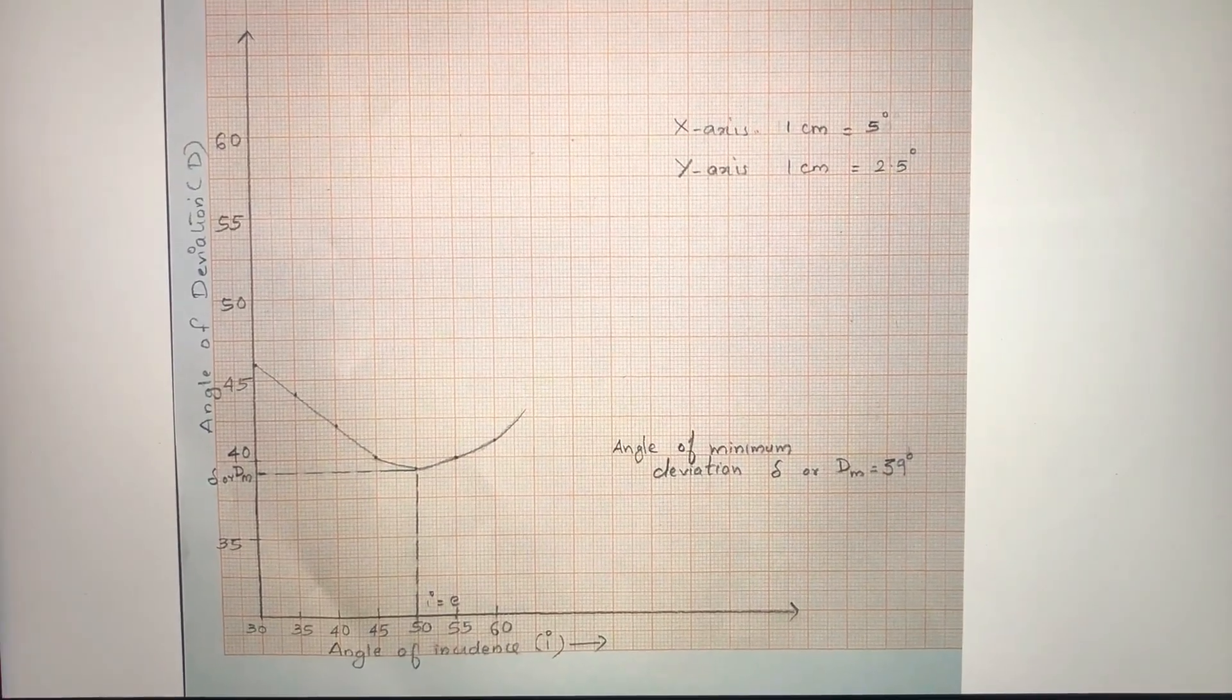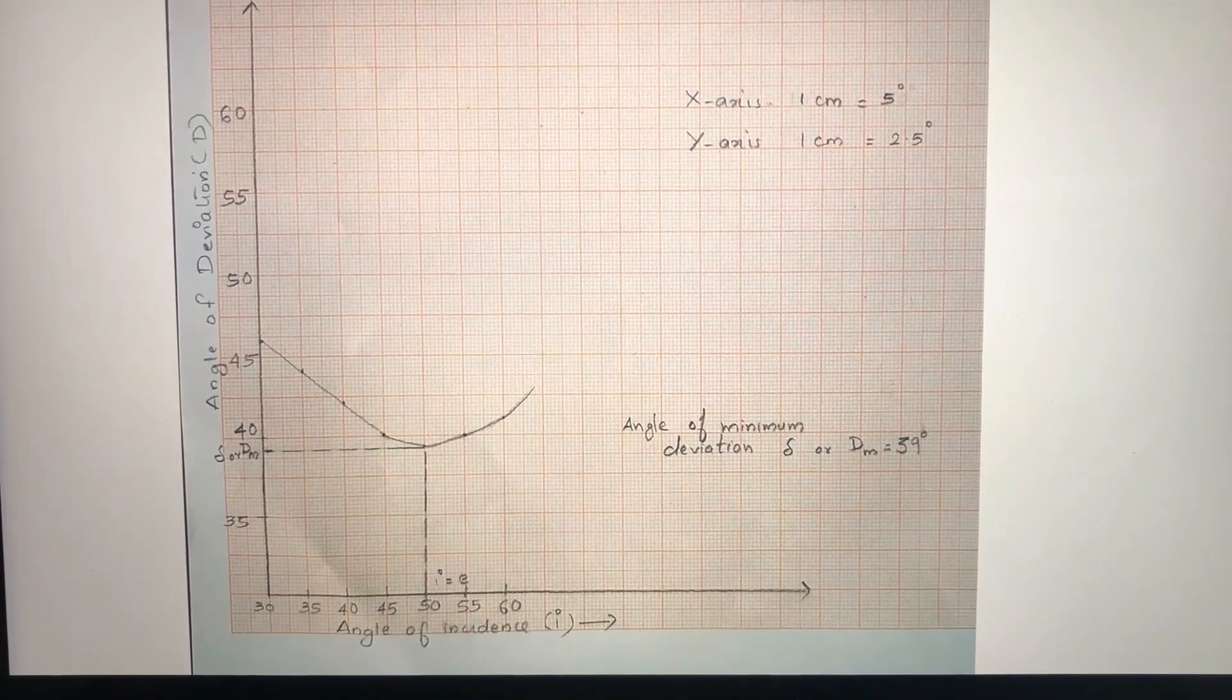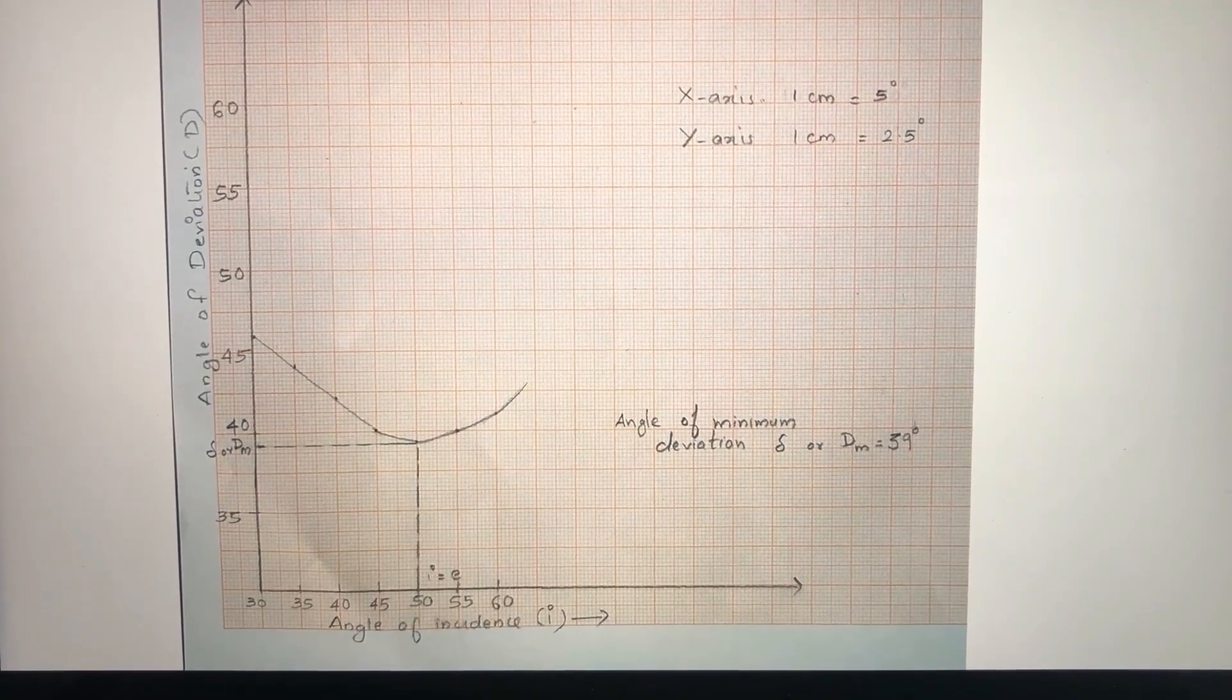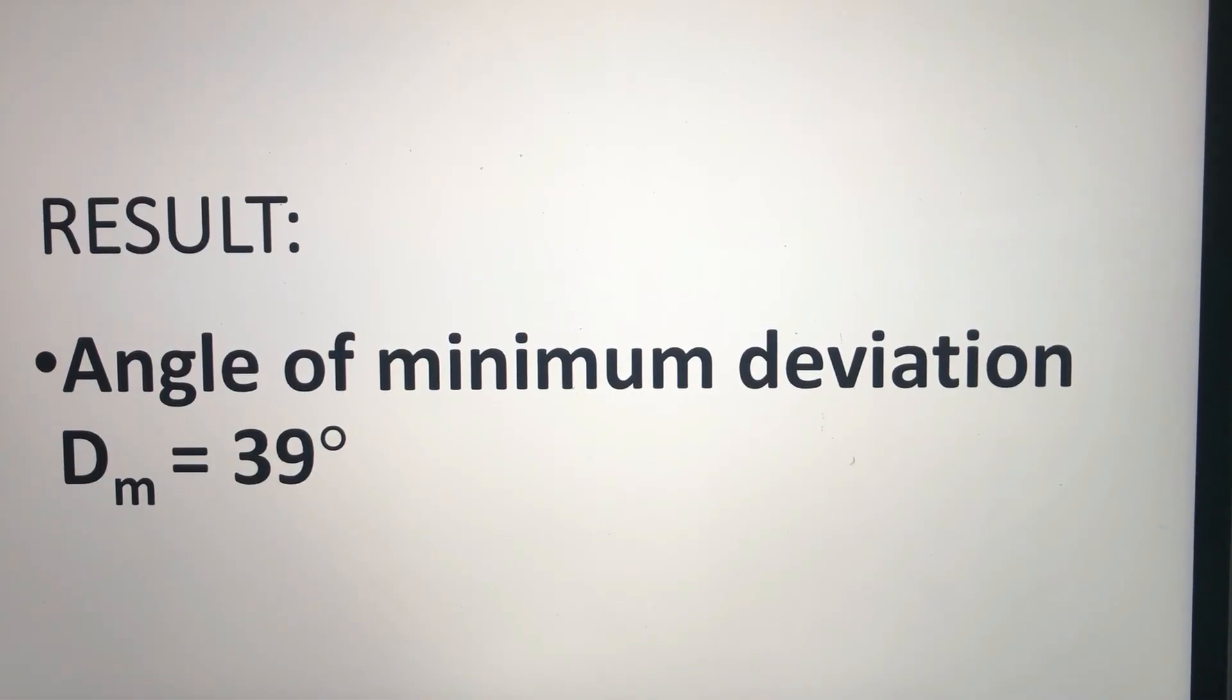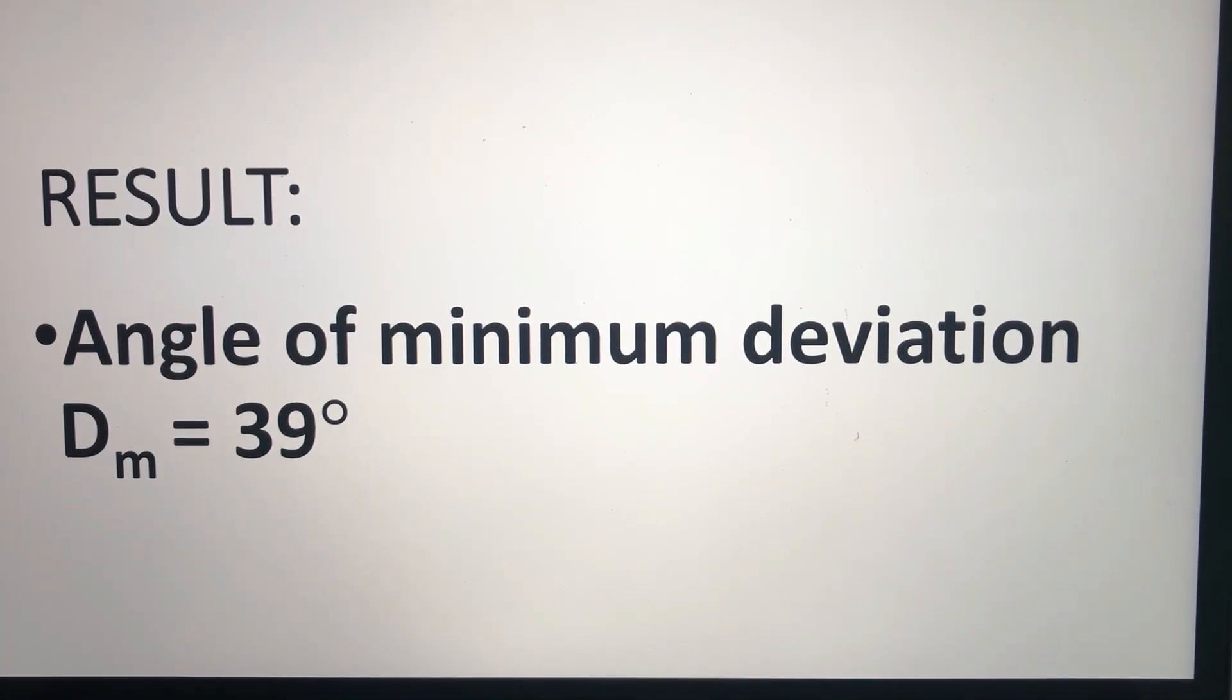You can see the angle of deviation delta or D_m is equal to 39 degree. Result: Angle of minimum deviation D_m is equal to 39 degree.